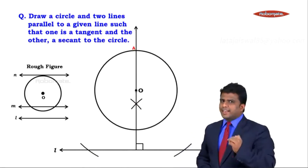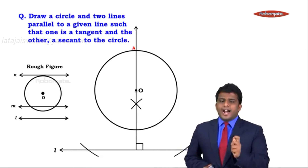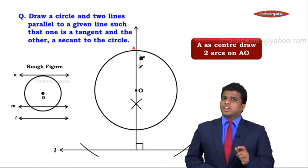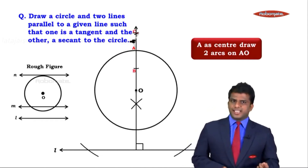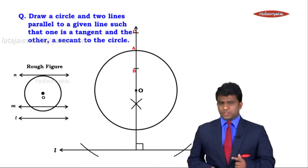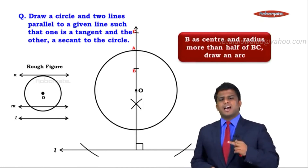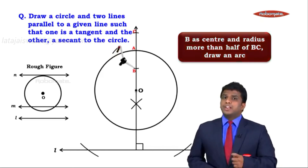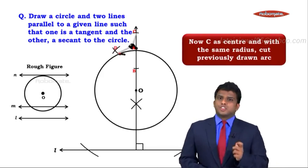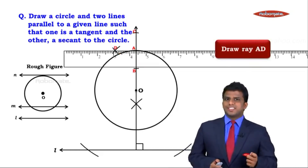We need one line as tangent and one as a secant. At point A on line OA, we draw two arcs with any suitable radius to get a segment BC. Now we draw the perpendicular bisector of BC: place the pointer at B, take radius more than half of BC, and cut an arc. With the same radius at C, cut an intersecting arc to get point D. We draw ray AD, giving us a perpendicular at point A. Mark the 90-degree symbol.